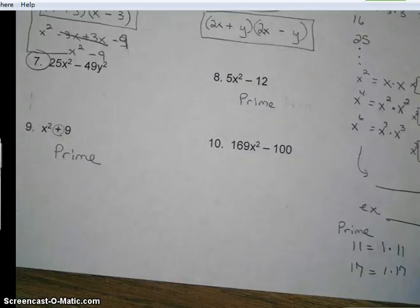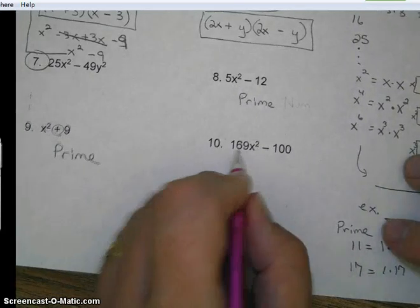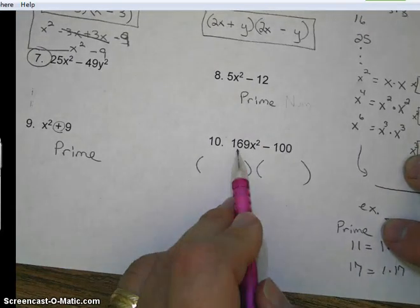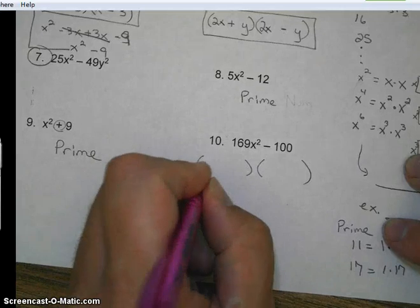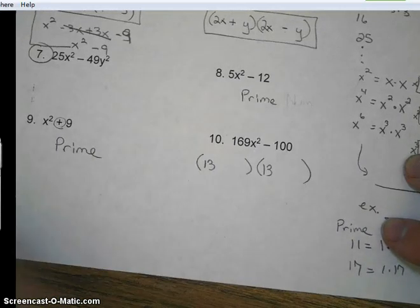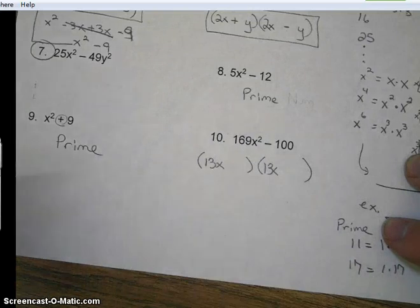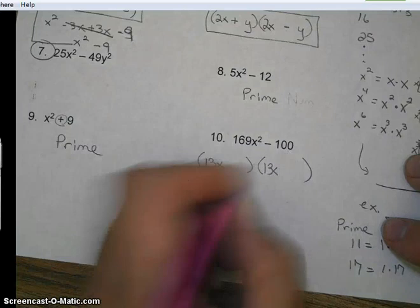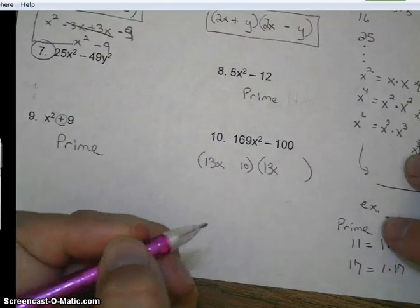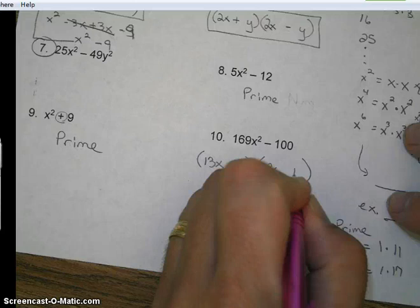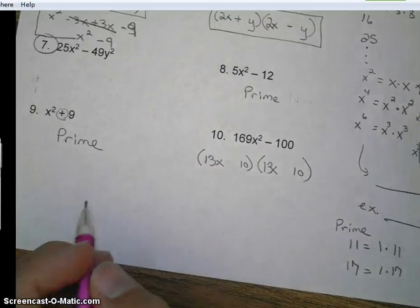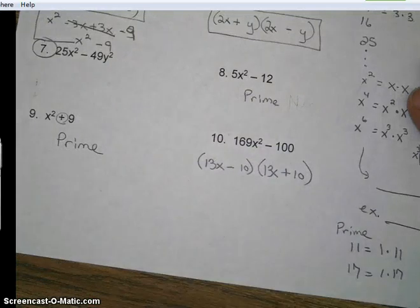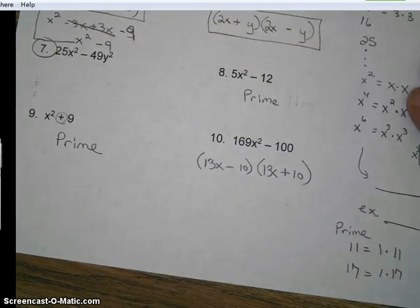Last one on this page. Breaking it up into two parts. 169 breaks up to 13 and 13. x squared breaks up to x and x. 100. 10 times 10. You really thought I had to think about that, didn't you? And just so you know, order doesn't matter on the plus and the minus. I'm going to go ahead and put the minus first and the plus second. And there you have it. There's your factors. Pretty cool, huh?